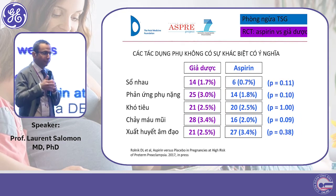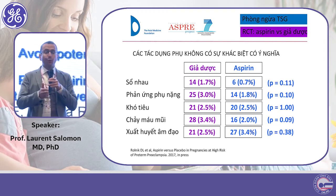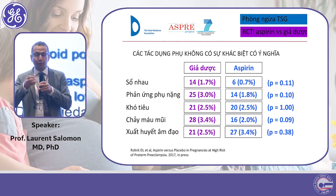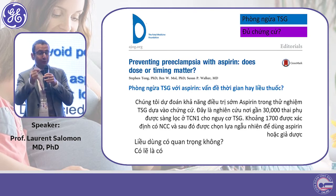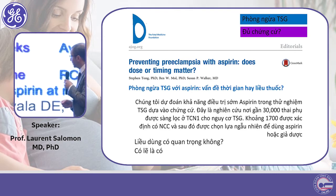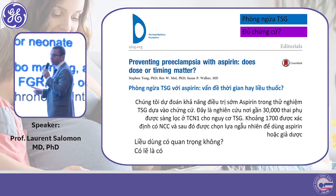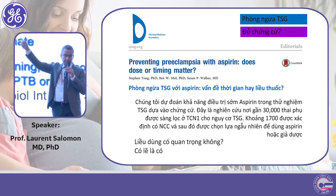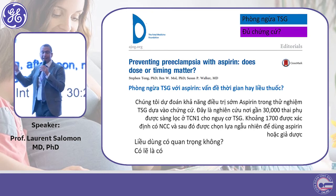As always in our field, it is important to do things properly. Just as you screen in a standardized manner following the rules, it is the same for aspirin. If you give aspirin to a high-risk woman, it has to be given the right way: 150 milligrams, and probably at bedtime, because that is when the anti-platelet activity of aspirin is most efficient.